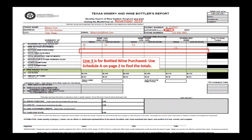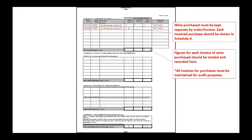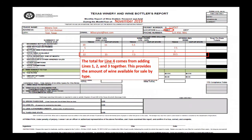Line three is for bottled wine purchases. Use Schedule A on line two to find the total. Wine purchases must be kept separate by order or invoice. Each invoice purchase should be shown in Schedule A. Figures for each invoice of wine purchased should be totaled and recorded here. All invoices for purchases must be maintained for audit purposes.